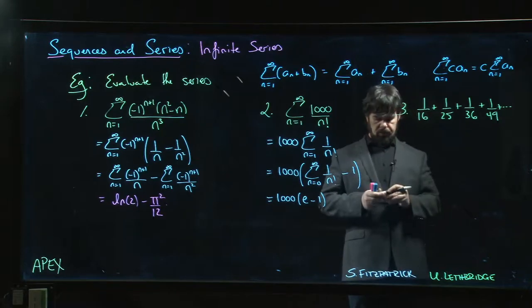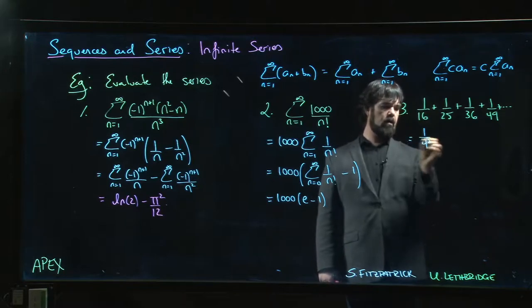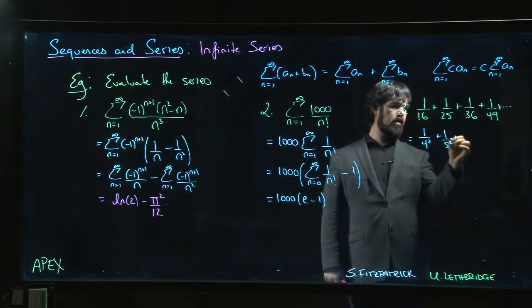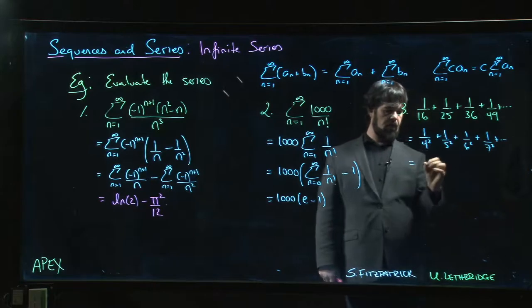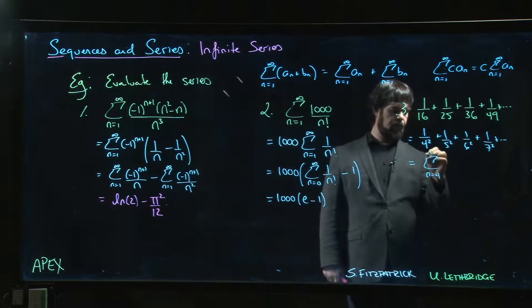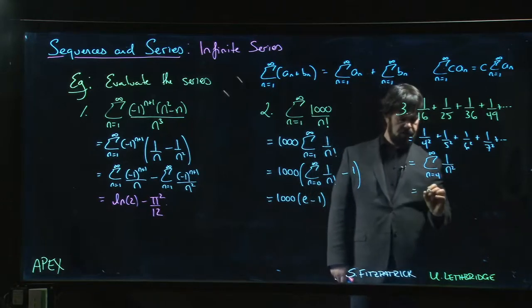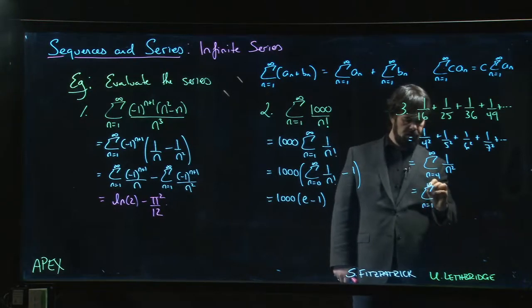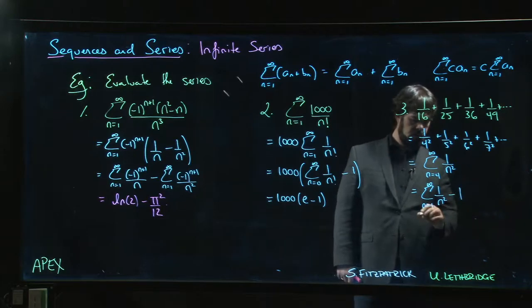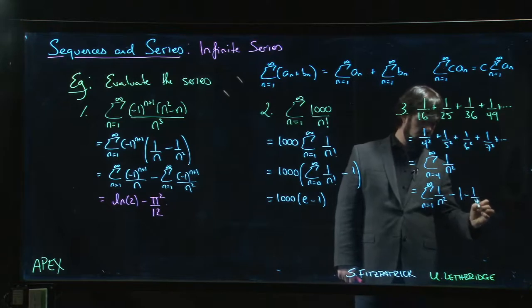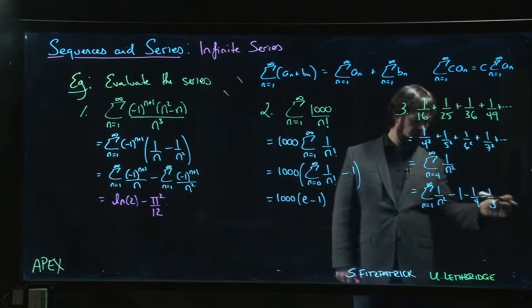This last one: we have 1/4^2 + 1/5^2 + 1/6^2 + 1/7^2, so we've got the sum from n=4 to infinity of 1/n^2. That is the same thing as the sum from n=1 to infinity of 1/n^2 if we subtract off the n=1 term, the n=2 term, and the n=3 term. Sorry, 3^2 is 9.